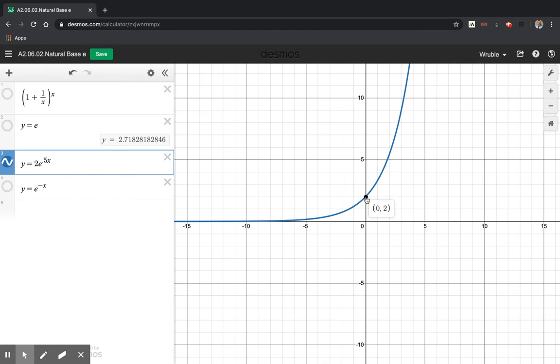So we can see that we have the point there at (0, 2), and then we have another point at (2, 5.4), a little bit more.